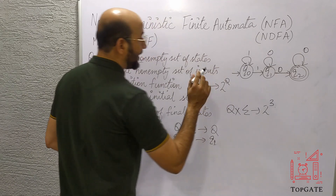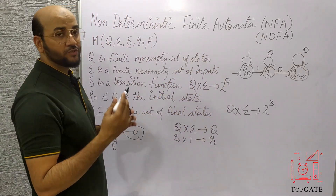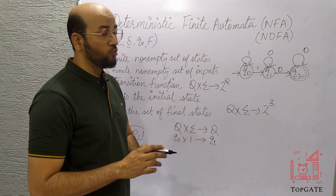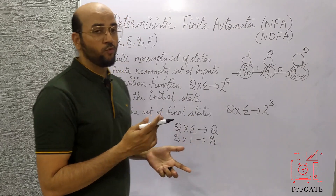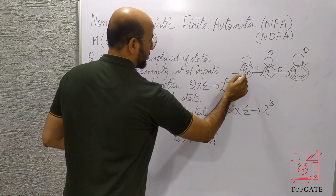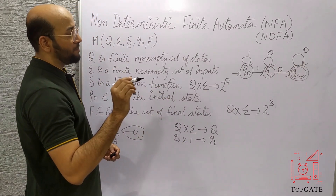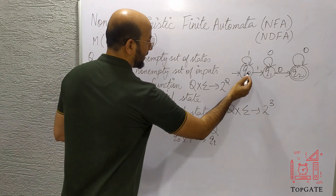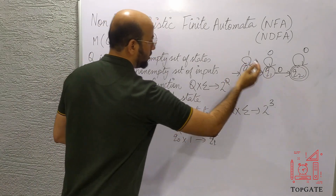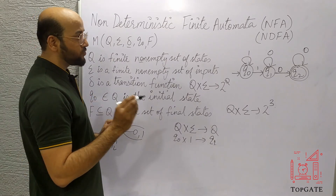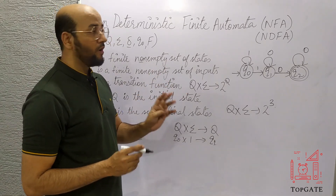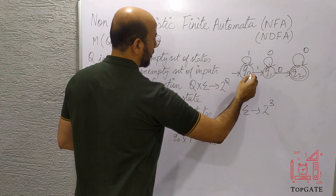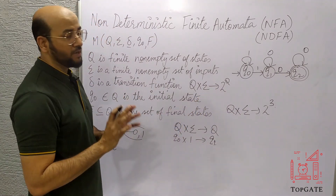That is why it is called NDFA — non-deterministic finite automata. With a given state and current input, we cannot uniquely identify which state to go to. For example, when at Q0 with input symbol 1, there is no unique answer — we could go to Q0 or Q1. There is no unique answer, which is why it is called non-determinism. We cannot determine which state to go to by applying any particular input.